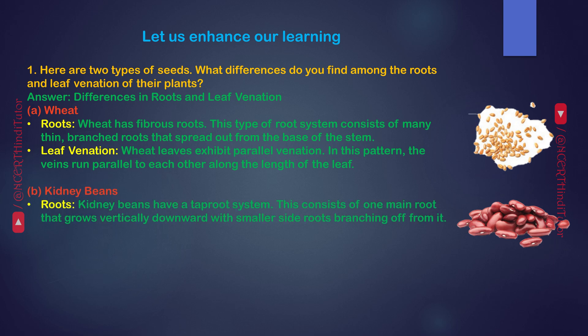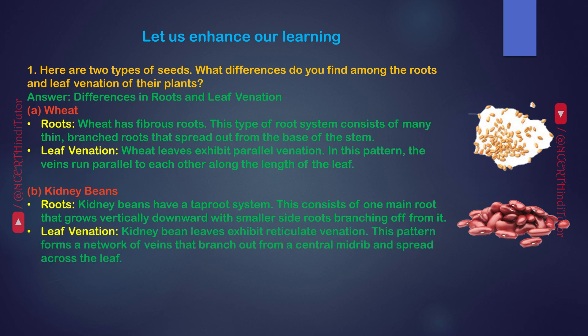B. Kidney beans. Roots: Kidney beans have a tap root system. This consists of one main root that grows vertically downward with smaller side roots branching off from it. Leaf venation: Kidney bean leaves exhibit reticulate venation. This pattern forms a network of veins that branch out from a central mid-rib and spread across the leaf.